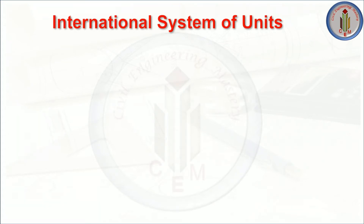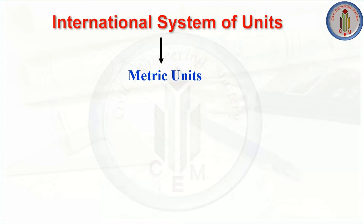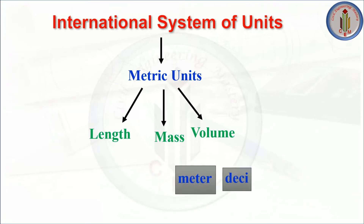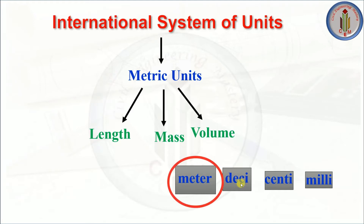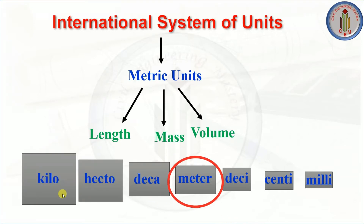We have the International System of Units, called SI units. Metric units are the SI units used worldwide globally. Only three countries are not using metric units — they use imperial units. In metric units, the basic unit for length is meter. Smaller units include decimeter, centimeter, and millimeter. Bigger units include decameter, hectometer, and kilometer.